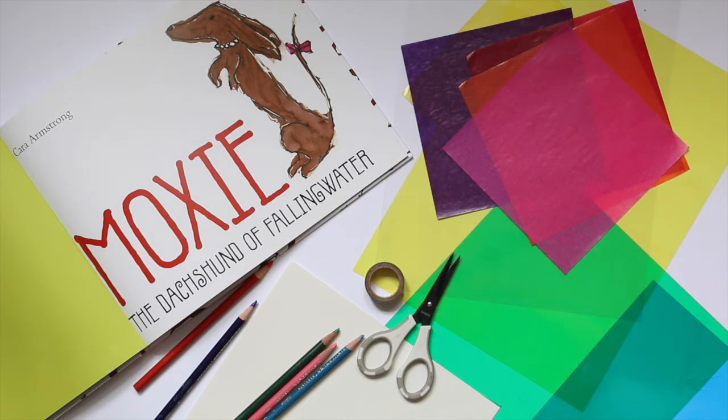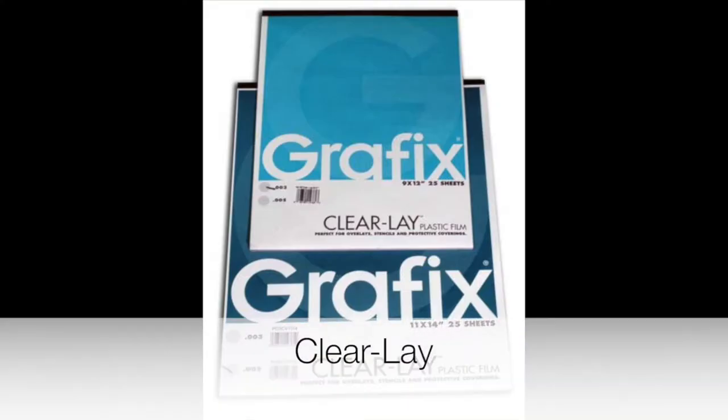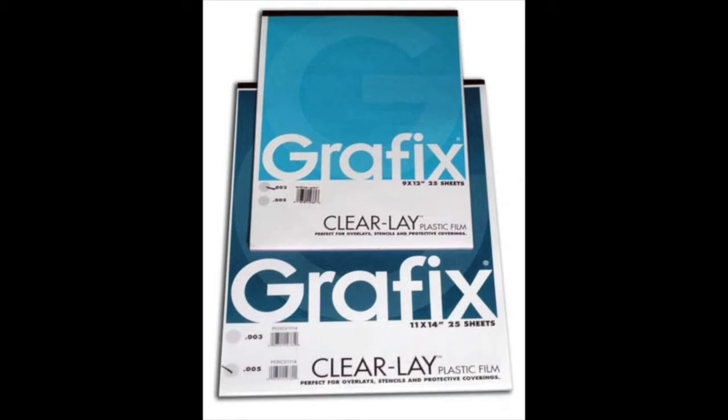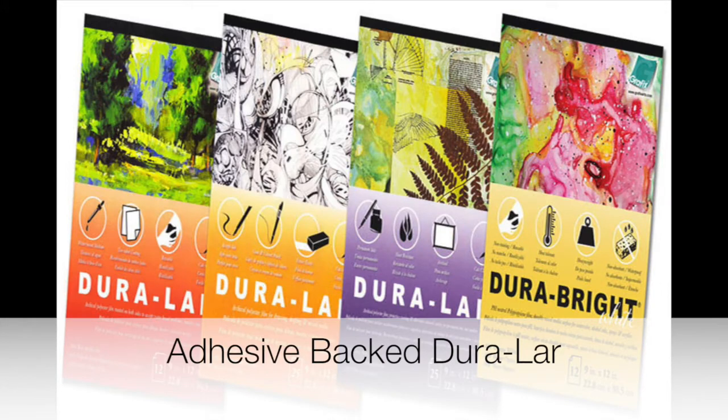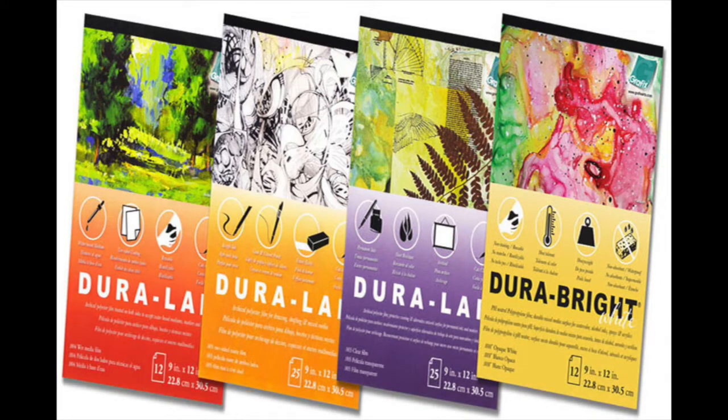Today we're going to use a few products by Graphics to make our own stained glass windows. The first product is Graphics Clearlay, which is a vinyl film, available in transparent or totally clear, and also in transparent colors including red, yellow, green, and blue. We're also going to use adhesive-backed Duralar, which is a film with a permanent adhesive backing.